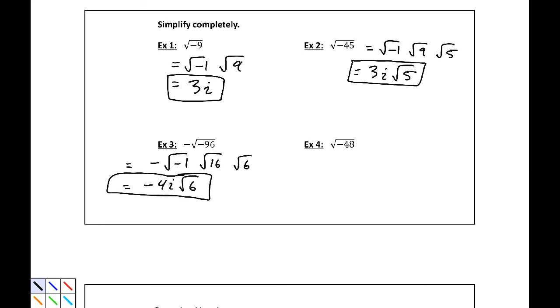For number 4, we have negative 48 and 16 also goes into that. So this would be root negative 1, 16, 16 times 3. This would be 4i root 3.